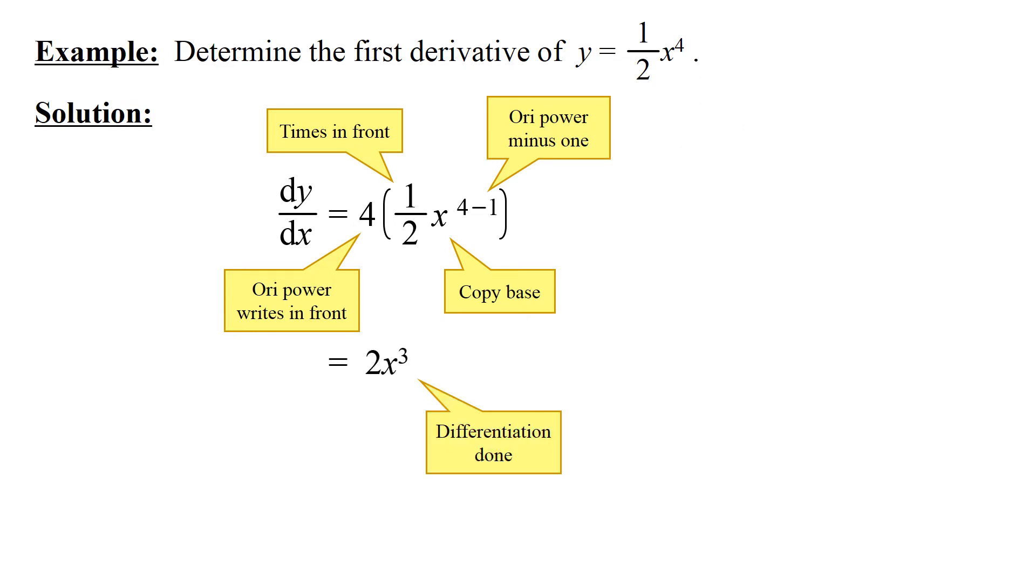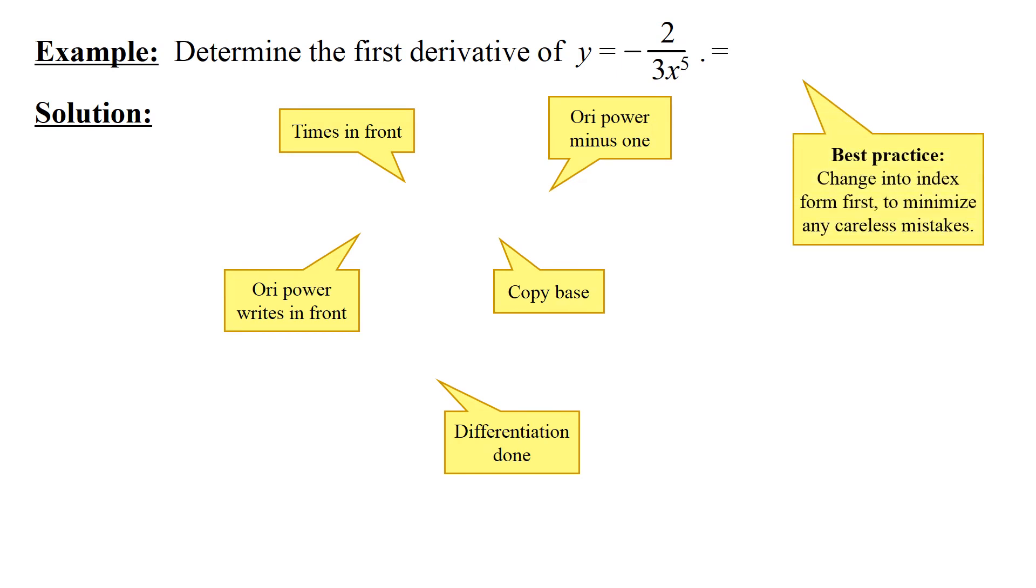Again, next example. Like I said, change it into index form first. Ori power writes in front, times in front, copy base. Ori power minus one, differentiation done.